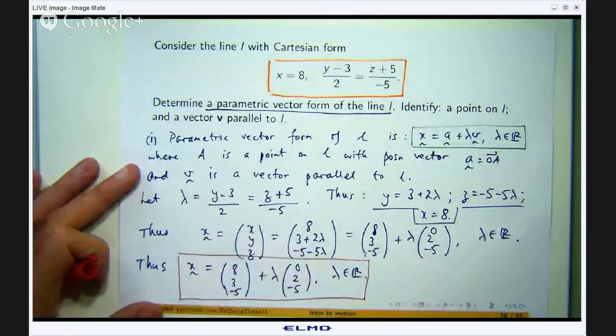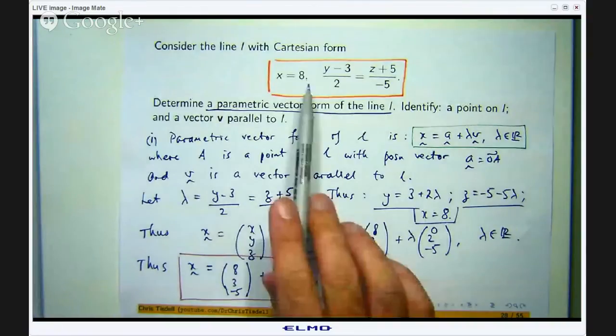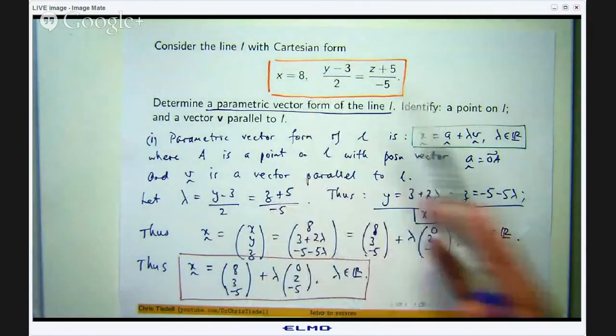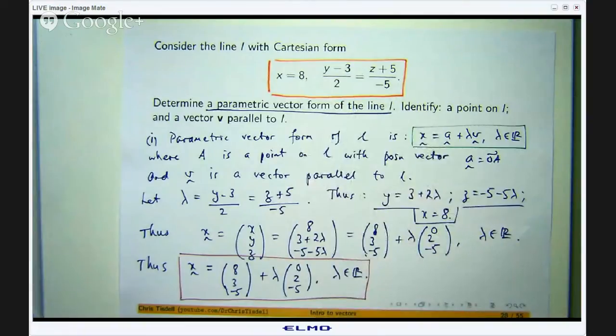So that is the long way of doing it but many people just identify what a1, a2, a3 are from here v1, v2, v3 and then write down the answer. But if you forget the parametric vector form then you can always derive it from just introducing a parameter lambda and then rearranging.